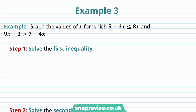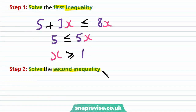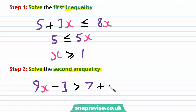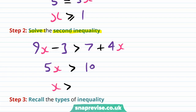Our last example asks us to graph the values of x for which 5 plus 3x ≤ 8x, and 9x minus 3 > 7 plus 4x. Step 1: solve the first inequality. 5 plus 3x ≤ 8x gives 5 ≤ 5x, so x ≥ 1. Step 2: solve the second inequality. 9x minus 3 > 7 plus 4x gives 5x > 10, so x > 2.